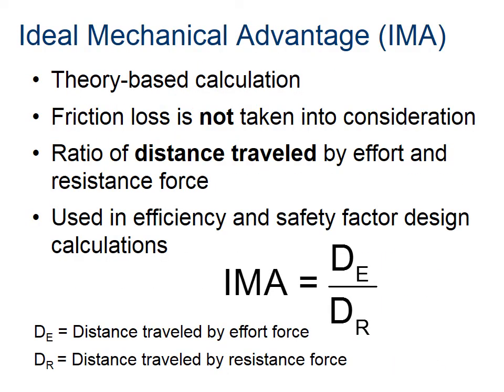Let's take a closer look at the two different kinds of mechanical advantage. The first is called ideal mechanical advantage, or IMA. This is purely a theoretical calculation — we can measure or be given distances. It's important to note that in the ideal world, we don't consider friction. Two key takeaways: don't include friction, and we use distances. The formula is the ratio of the effort distance, d sub e, divided by d sub r, which is the resistance distance.